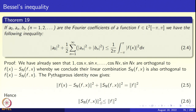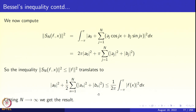Let us compute the norm squared of Sn(f). It will be the integral from −π to π of |a0 + summation j=1 to n of aj·cos(jx) + bj·sin(jx)|² dx. Expanding this, the cross terms like cos(jx)·sin(lx) integrate to 0, as do cos(jx)·cos(kx) for k≠j and sin(jx)·sin(kx) for j≠k. Only the square terms contribute. The value is exactly 2π|a0|² plus π times summation j=1 to n of |aj|² plus |bj|².